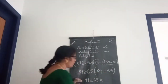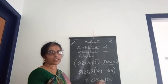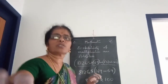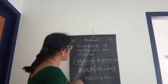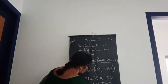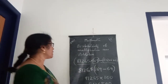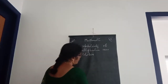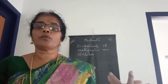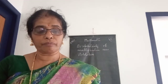169 minus 69 is 100. So we have 81,265 into 100. That means you put two zeros with this number. 81,265 and two zeros — the answer is 81,26,500. So you find the common number, take it out, then do the addition or subtraction inside the bracket.